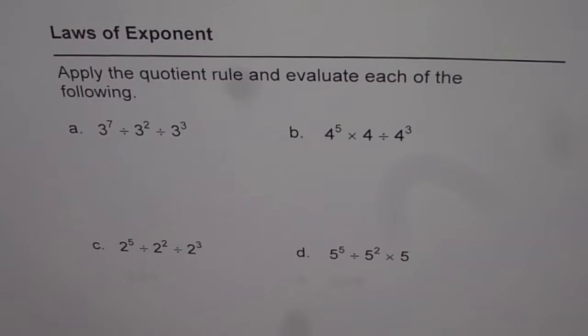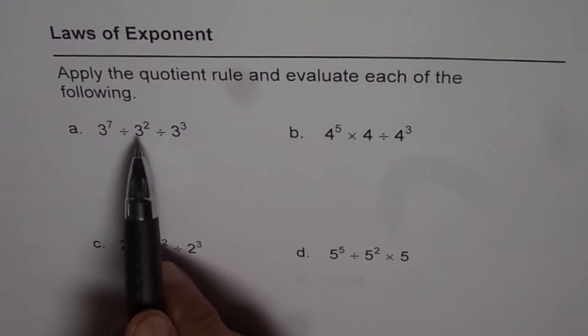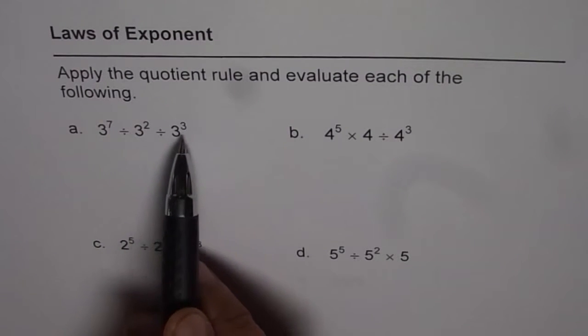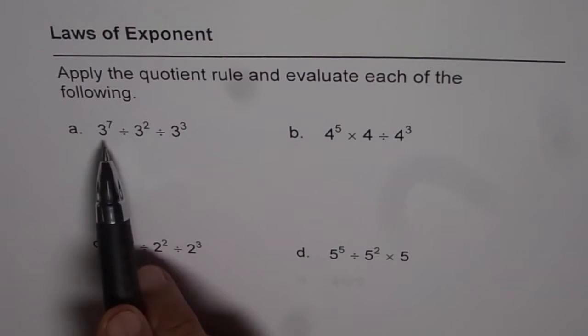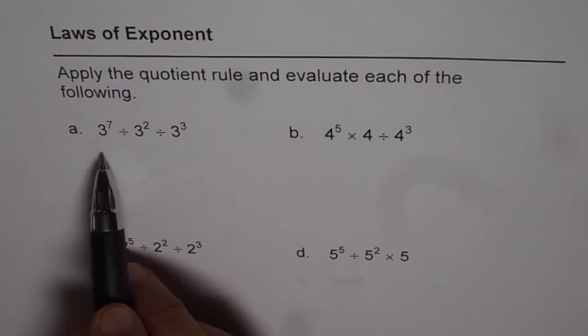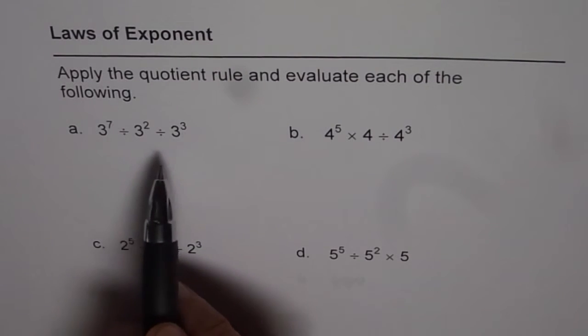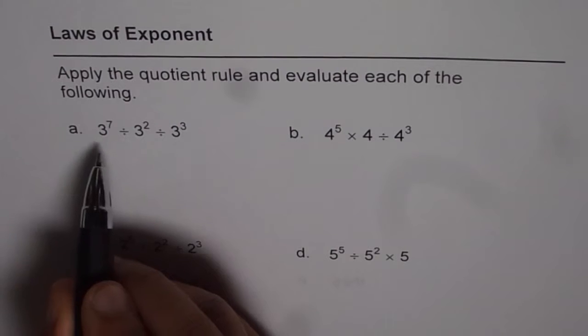So let's start with part A which is 3 to the power of 7 divided by 3 square divided by 3 cube. Now when you have division like this, then you should always do from left to right. If you do it from left to right, you will always get the right answer and that is the rule. So let's start doing from left to right.